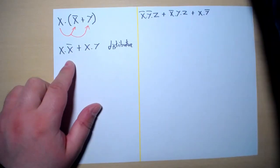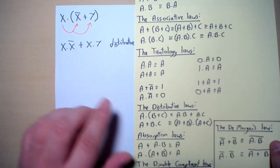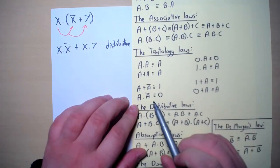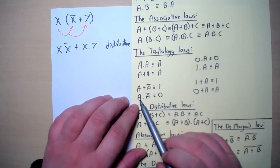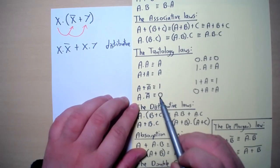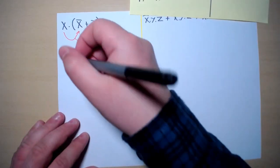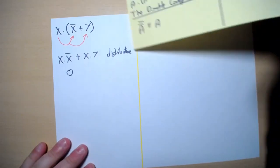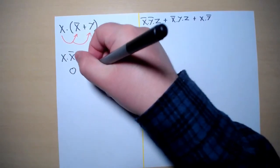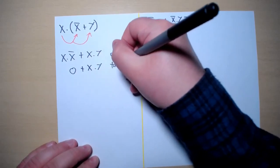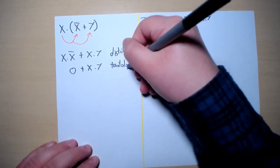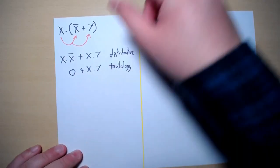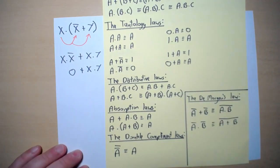It is very important that you always write down the law used in each step — in this case the distributive law. Now here we have X and X-naught, and using the tautology law we know that A and A-naught gives us zero. Therefore X and X-naught gives us zero.